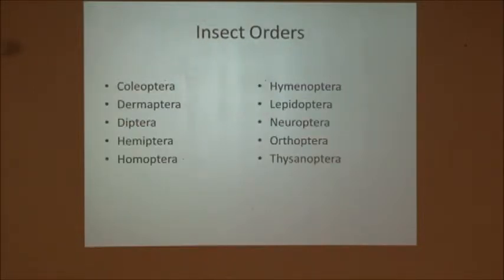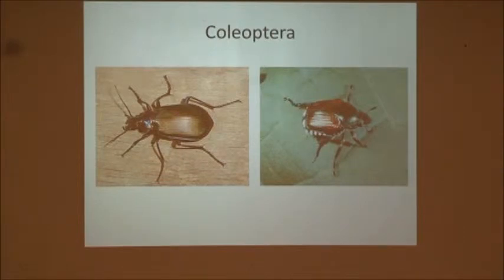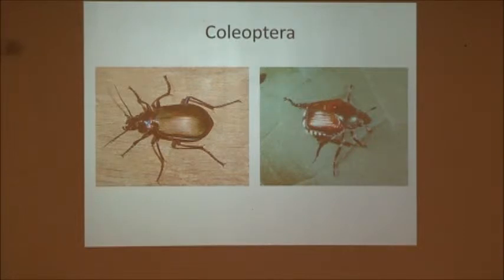We'll go through each of the insect orders a little bit. Coleoptera — most of your beetles and weevils are going to be in this order. They have two separate segmented wings. For example, the Japanese beetle — very familiar — most of your beetles are going to be in this category.